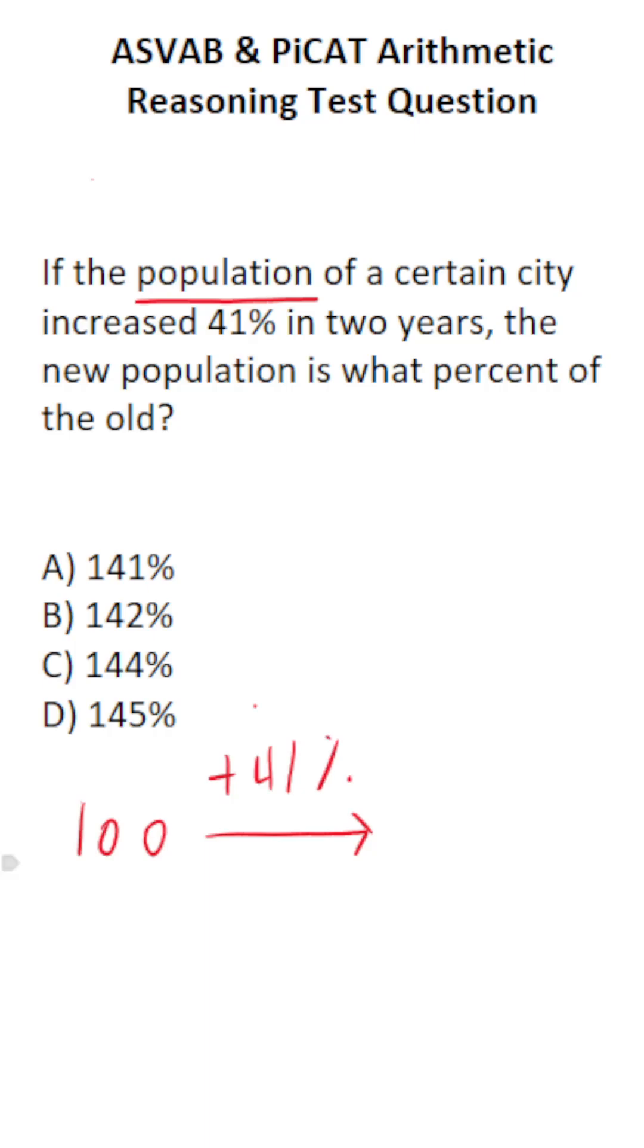Now, why did I choose 100? Because to figure out what its new population is, we got to figure out what 41% of 100 is. To do that, you would take 100 and multiply it by the decimal equivalent of 41%, which is 0.41. You should know that that's going to simply be plus 41 people.